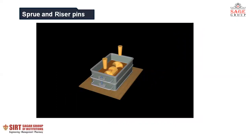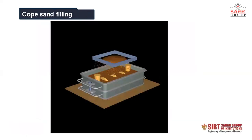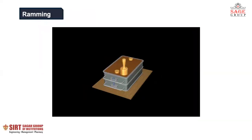For pouring of molten metal, sprue pins and riser pins are provided. They are located in the sand so that the molten metal can be poured into the mold. The upper box, which is called the cope, is also filled with sand and ramming is performed again to pack the boxes.